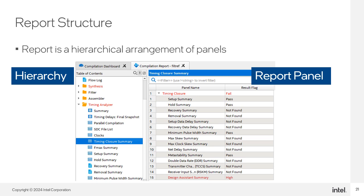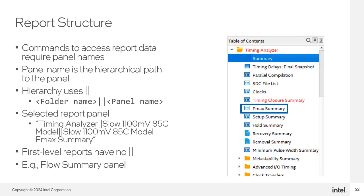This picture shows the compilation report window in the Intel Quartus Prime software GUI. At the top level there are panels starting with flow summary, then folders for each compiled module — synthesis, fitter, assembler, and timing analyzer. Commands to access report panel data require you to specify the full report panel name, which is the complete hierarchical path including folder names. Hierarchical paths use two vertical bar characters to indicate each level of folder hierarchy — for example, a panel inside a folder is identified as folder_name||panel_name. Nested folders use the same method with each level separated by two vertical bars.